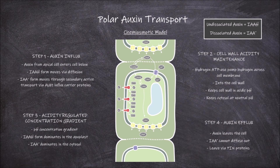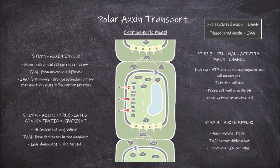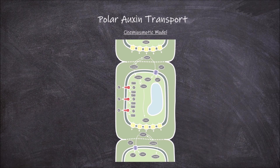Once out of the cytosol, a lot of the auxin in the dissociated form is converted into the undissociated form and diffuses into the cell below it. The remaining dissociated form can go through the AUX1 influx co-transporter carriers. And so the transport of auxin from cell to cell in this polar manner continues. The auxin efflux proteins being primarily at the basal end of the cell causes auxin to move in this apical-to-basal pattern throughout the plant.